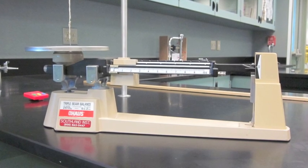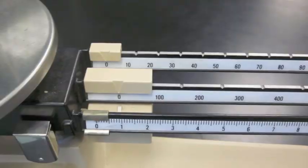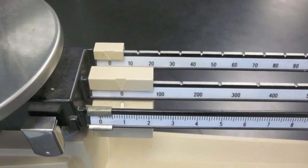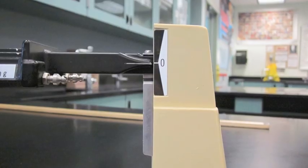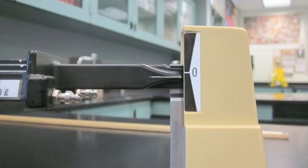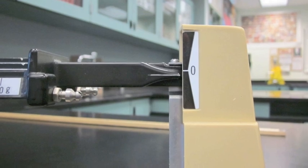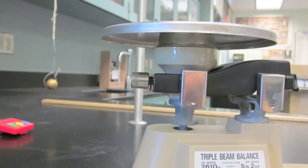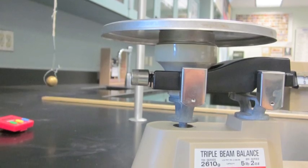Another piece is our triple beam balance, which we will use to find the mass of the pendulum bobs. Make sure that your triple beam balance is zeroed in. It should look like this. If it looks like this and it's not zeroed, those lines don't match up, make sure you turn the knob on the left hand side under the pan.